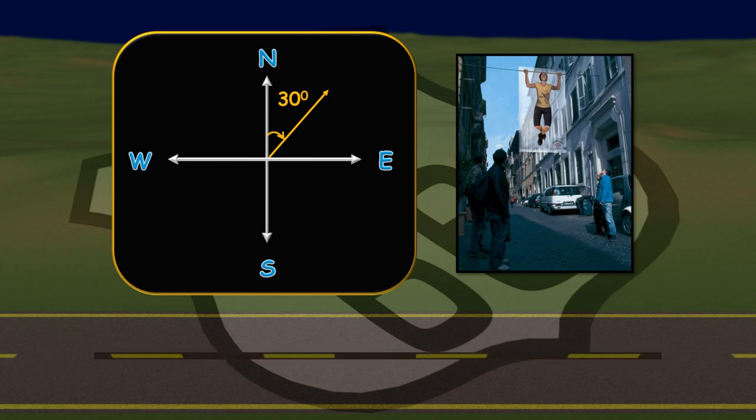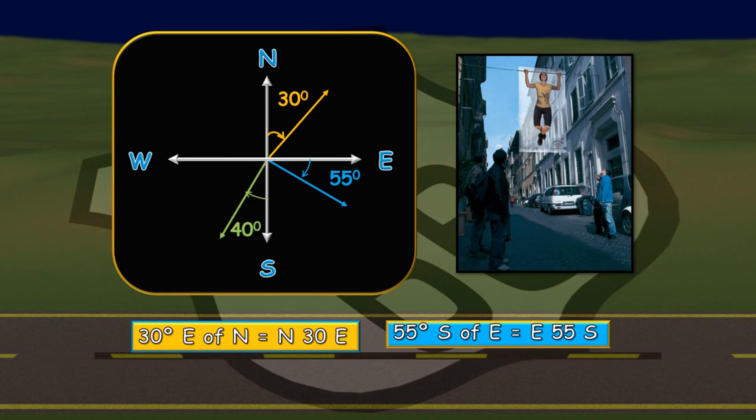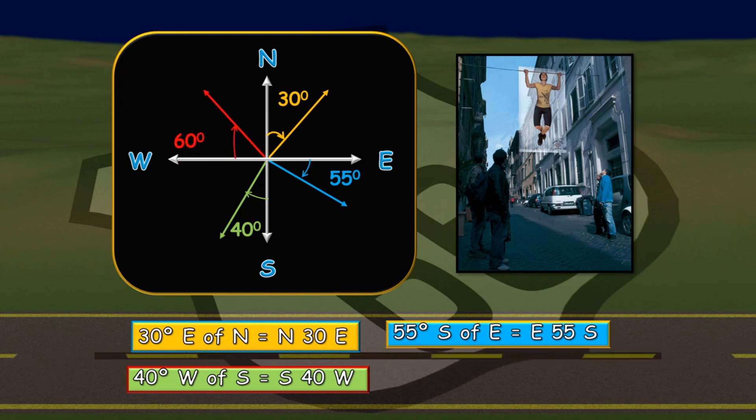Let's put it into a sample here based on the diagram. The first one, we have 30 degrees. If you will notice, 30 degrees starts from the north and the arrowhead is pointing going to the east. Therefore, we can say that it is 30 degrees east of north or north 30 east. Next is 55 degrees south of east or east 55 south. Next one is 40 degrees. If you will notice, the point of the arrowhead is going to west. Therefore, it is 40 degrees west of south or south 40 west. And lastly, we have 60 degrees. It is 60 degrees north of west or west 60 north. That is how you use the compass direction in a particular given angles.